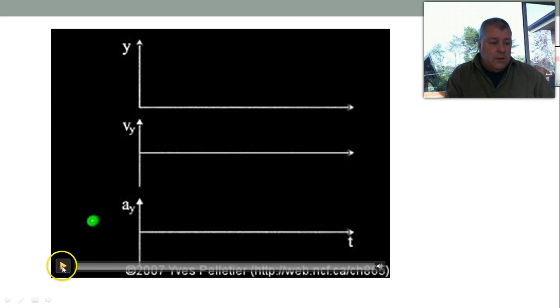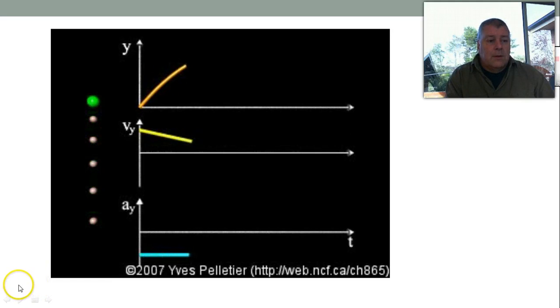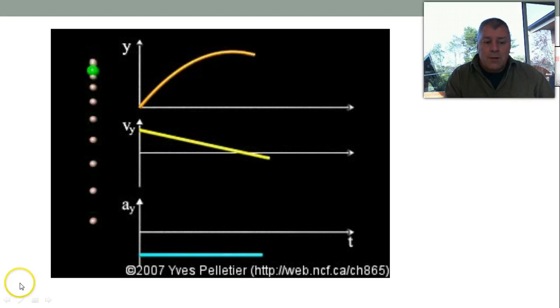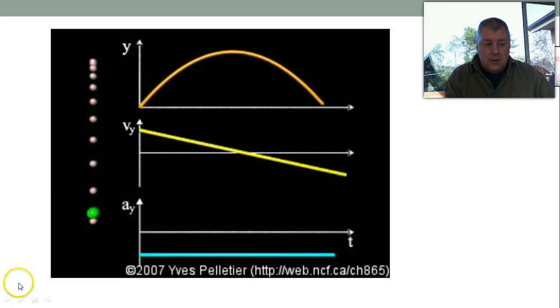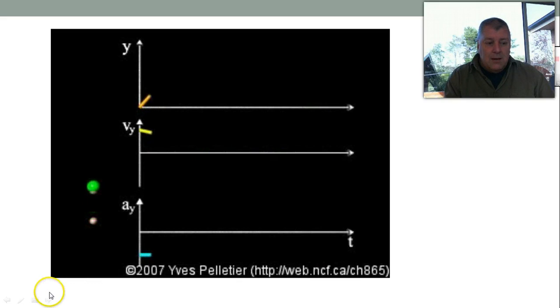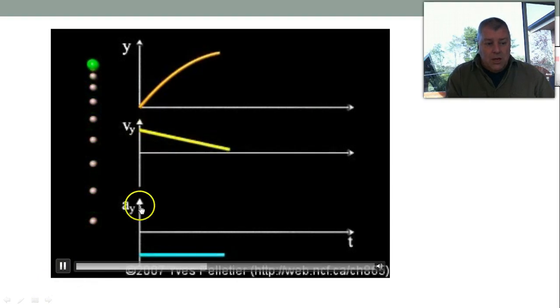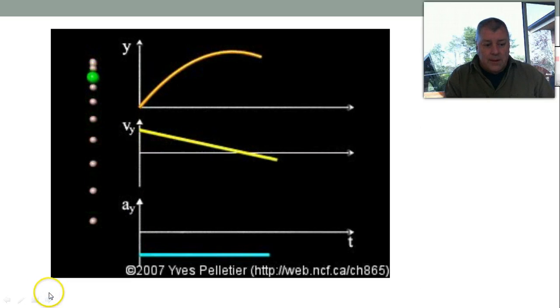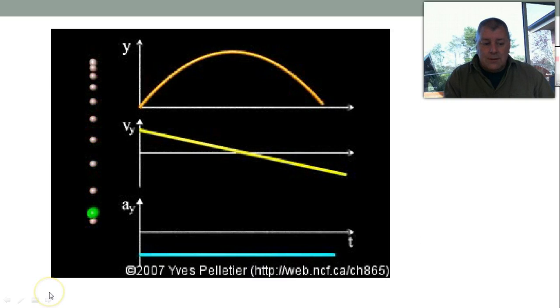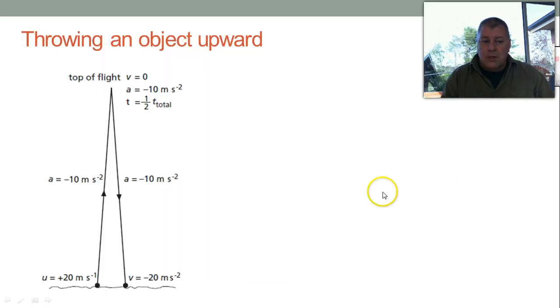And we've got this little video here to show you. So there's the ball going up, slowing down to a stop for an instant, gravity is still acting on it, and it falls back down. So this is our displacement, this is our velocity, and this is the acceleration. The going up and the going down are just mirror images of each other, and that's what's being shown in this diagram here.